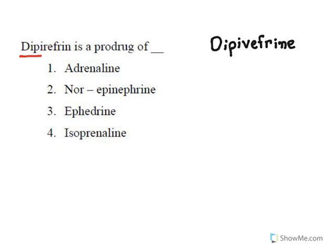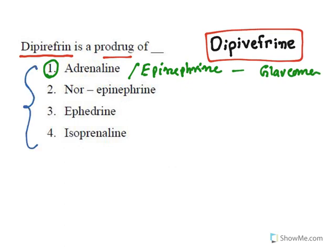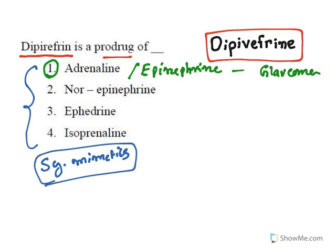Next question: 'Dipivefrine is a prodrug of...' Dipivefrine is a prodrug of adrenaline (epinephrine), both names referring to the same compound, which is widely used to treat glaucoma. The options — adrenaline, noradrenaline, ephedrine, isoprenaline — are all sympathomimetics, meaning they imitate the action of sympathetic neurotransmitters. The correct answer is adrenaline/epinephrine.